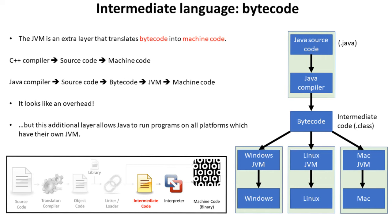The Java Virtual Machine is an extra layer, so it has to translate this bytecode into machine code. With a high level language like C++, we directly compile source code into machine code. But with Java, we compile the source code into bytecode and then the Java Virtual Machine interprets it again into machine code. This obviously looks like quite an unnecessary overhead, but with this additional layer we're allowed to run Java programs on any platform which has its own Java Virtual Machine — and this is the huge advantage of bytecode and other intermediary languages.